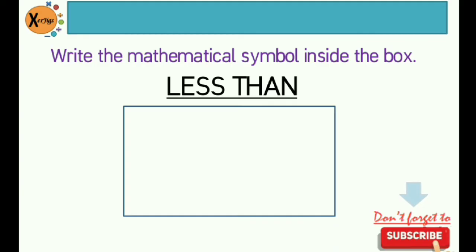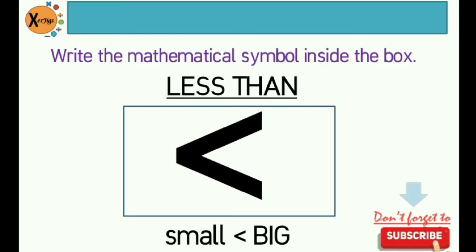Next, less than. So what is the mathematical symbol of less than? That's the opposite of greater than. So this time, the small end, which is pointing the small number, is on the left side, while the big end is on the right side. So small is less than big. Earlier, we have 5 is less than 8.